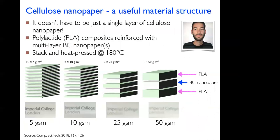We don't need to stick with just a single sheet of bacterial cellulose nanopaper. In one study, polylactide was stacked with various numbers of layers of cellulose nanopapers using heat pressing — simple and straightforward. Different configurations were manufactured, with the key constraint that cellulose grammage was kept constant at 50 grams per square meter — meaning either a single sheet at 50 g/m² or 10 sheets of 5 g/m² nanopaper, laminated and pressed together into a final composite product.